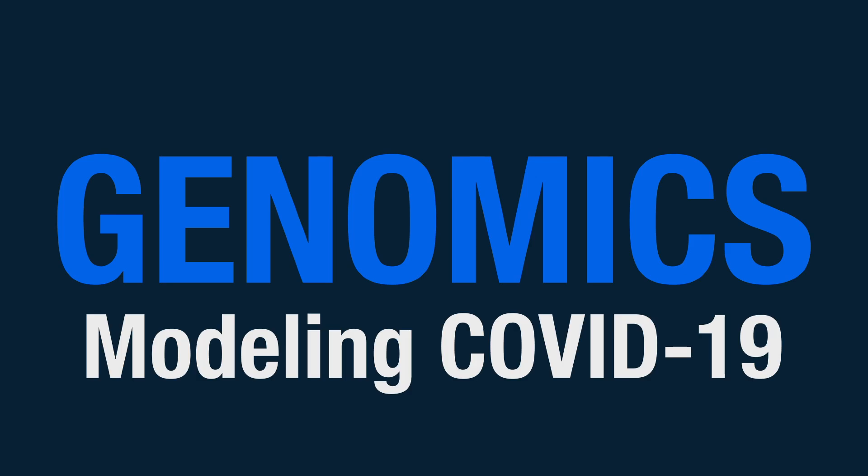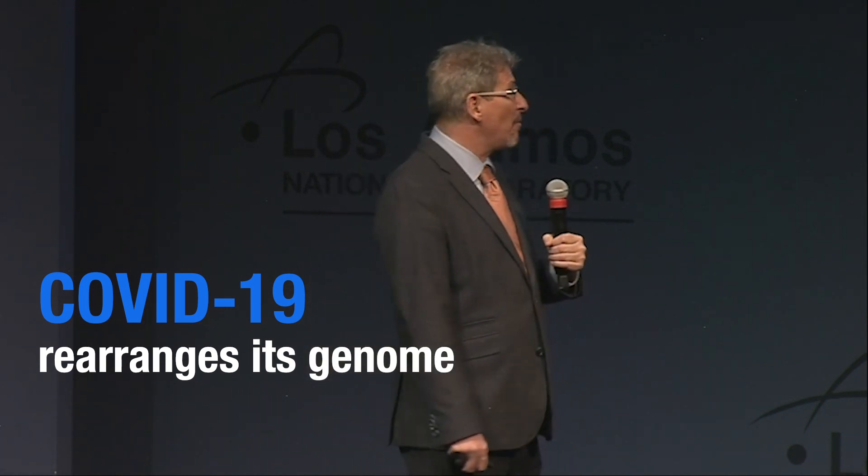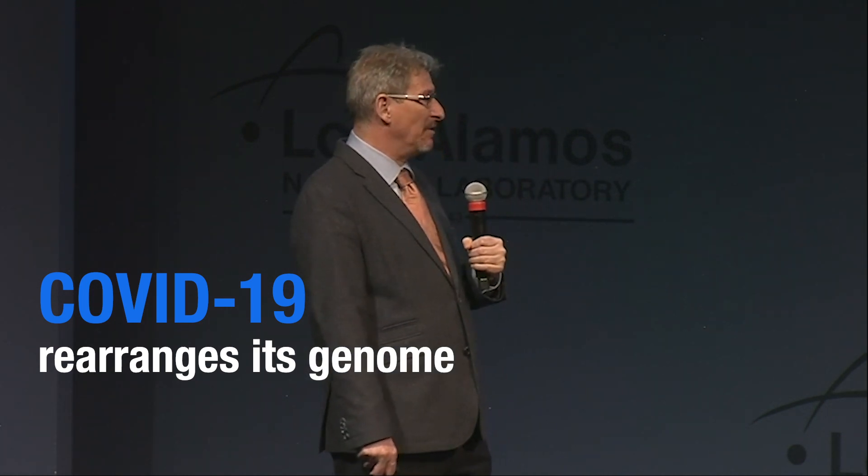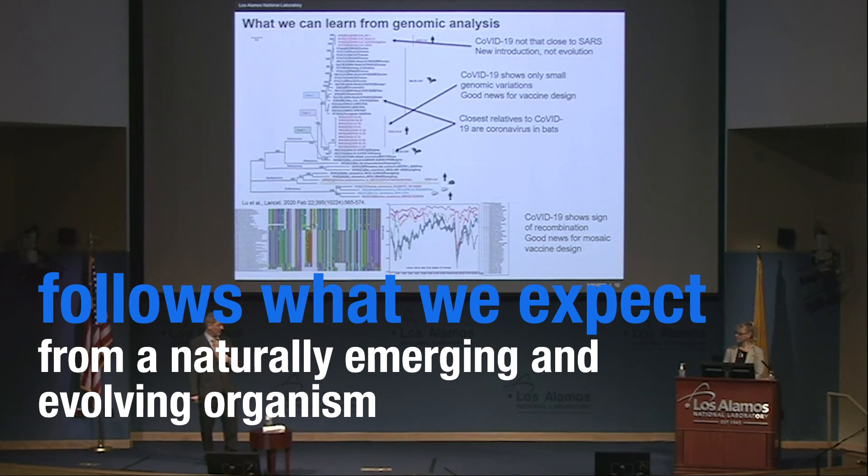When we look at sequence similarity and compare it, this particular virus not only made use of point mutation, but it also rearranges its genome a little bit. And looking at the patterns on how it has been rearranged and point mutations, we are very confident to say that this follows what we would expect from a naturally emerging and evolving organism.